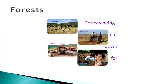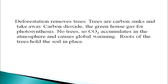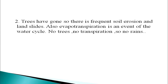Forests are natural resources but they have been cut down for use by humans — for converting them into cultivable fields, for building houses and for taking away logs for making shelters and furniture or fuel. The rate at which trees are cut far exceeds the rate at which trees grow, so forests are getting denuded. Deforestation removes trees. Trees are carbon sinks and take away carbon dioxide, the greenhouse gas, for photosynthesis. With no trees, carbon dioxide accumulates in the atmosphere and causes global warming.